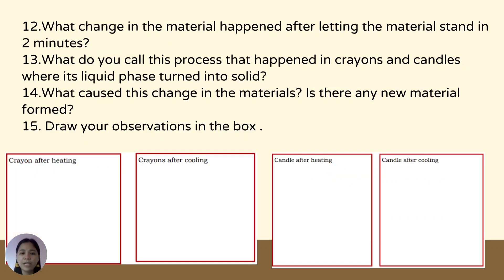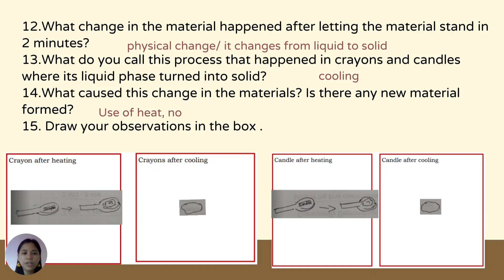What change in the material happened after letting the materials stand for 2 minutes? What do you call this process where the liquid phase turned to solid? What caused this change? Is there any new material formed? Answers: Number 12 — physical change, from liquid to solid. Number 13 — the process is called cooling. Number 14 — caused by use of heat. There are no new materials formed. Drawings show crayon and candle after heating and after cooling.